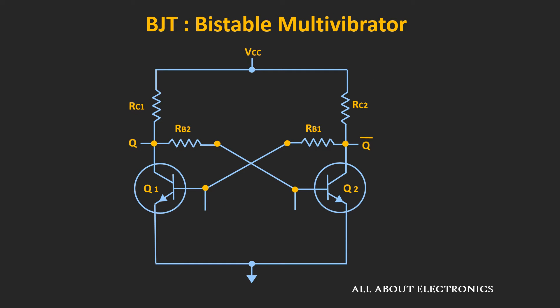This is the circuit of the bistable multivibrator. As you can see, the two transistors are cross-coupled. That means the collector of one transistor is connected to the base of the second transistor. And initially, when we power up the circuit, one transistor will be on while the other transistor will be off.